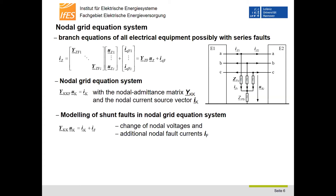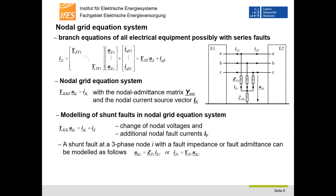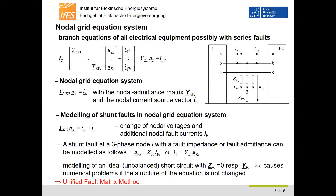Having a shunt fault, the nodal voltages change and additional nodal fault currents IF have to be considered. A fault impedance or fault admittance, modeling for example an arc resistance, can also be considered. With it, the relationship between fault currents and nodal voltages can be defined. Modeling of an ideal unbalanced short circuit with ZFI equal to zero, respectively YFI going to infinity, causes numerical problems if the structure of the equation is not changed. To overcome these problems, the unified fault matrix method offers also a solution.